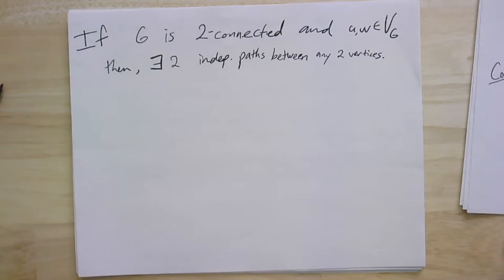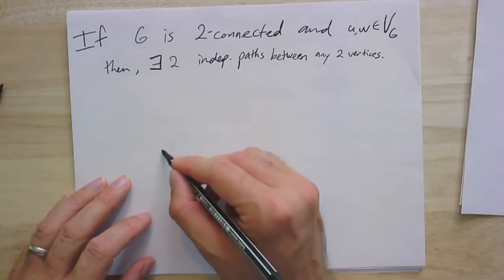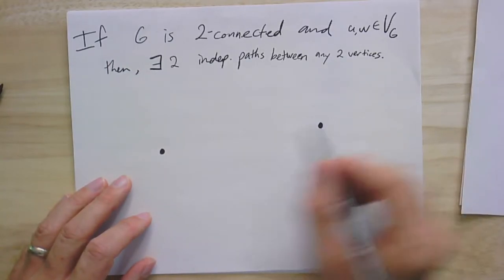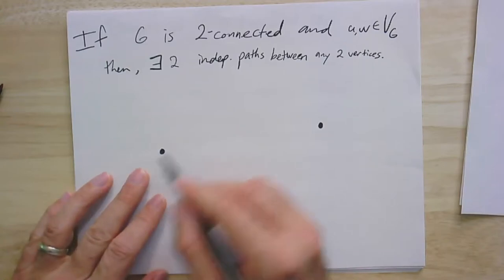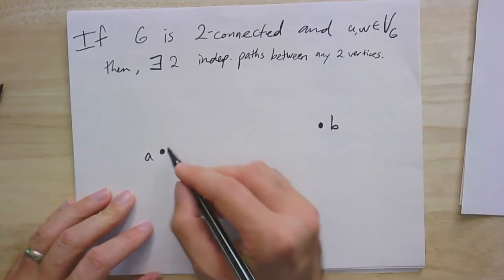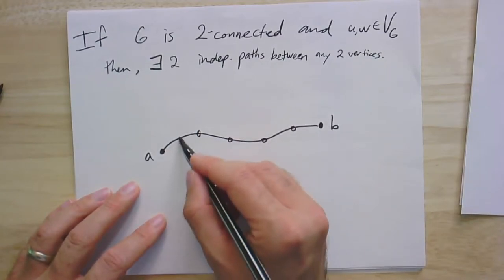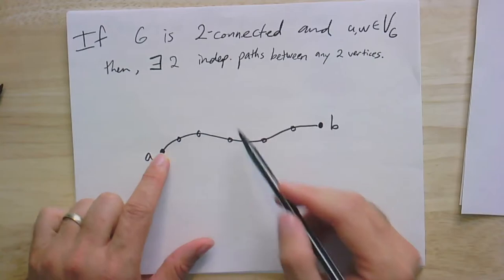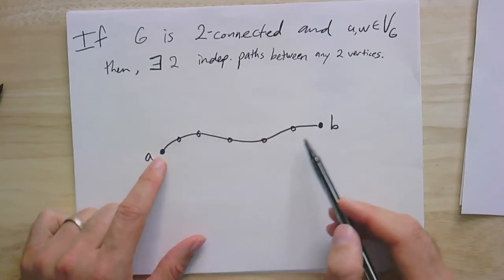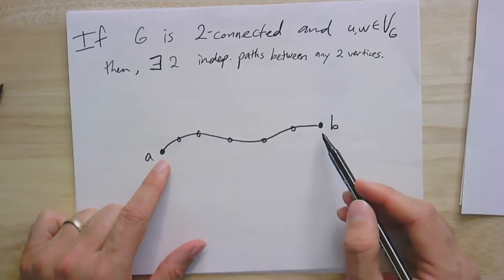Here's kind of where the theorem starts. If you take a two-connected graph, it seems like there ought to be two independent paths between any two vertices. We saw in the case for adjacent vertices we found a second path in the last video. But if I have one path from A to B, even if the graph is two-connected, I might not have any path that doesn't use some of those same vertices — so I might not have a path which is independent of the one I've drawn.